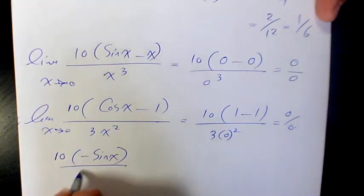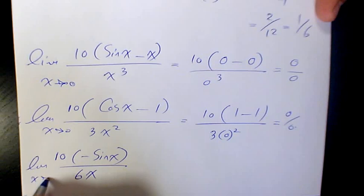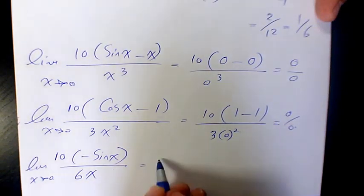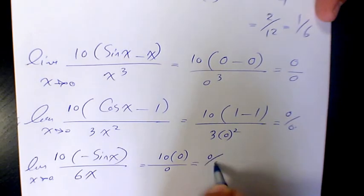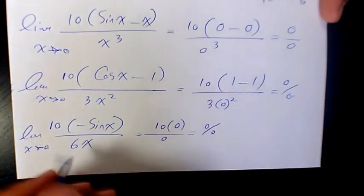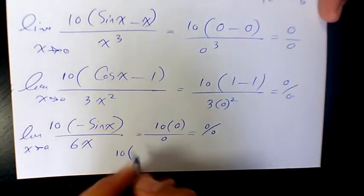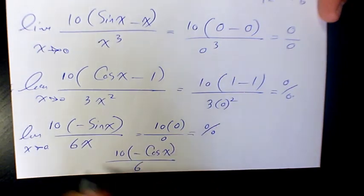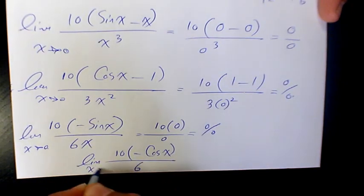When x approaches zero, it's going to be 10 times zero over zero. Again is zero over zero, one more time. 10 times negative cosine x over six. Limit when x approaches zero,